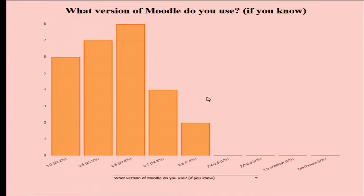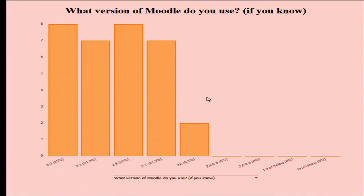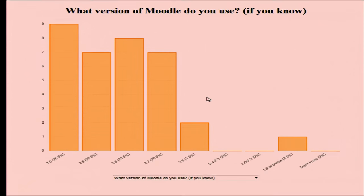So we have 3.0, 2.9, and 2.8. I'm surprised there aren't more people on 2.7 — oh, it's fighting back! Well, if you're on multiple Moodles, pick the highest number you can think of and add two.